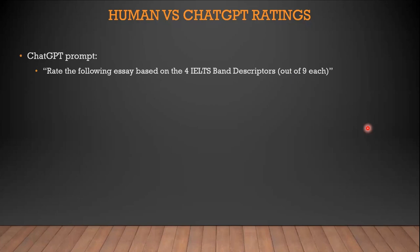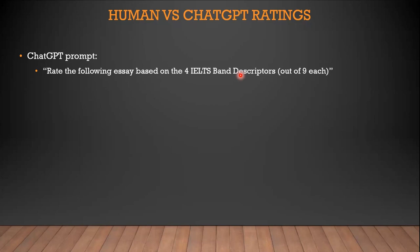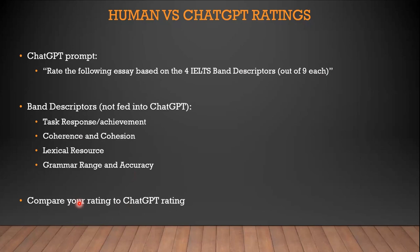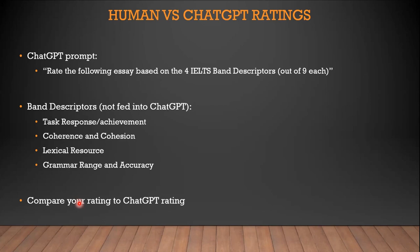To demonstrate how ChatGPT can help with writing assessment, I input sample essays using a simple prompt: 'Rate the following essay based on the four IELTS band descriptors out of nine each.' I didn't explain the descriptors — ChatGPT already knows them: task response, coherence and cohesion, lexical resource, and grammatical range and accuracy. We'll now compare the audience's ratings of a sample essay with ChatGPT's ratings.